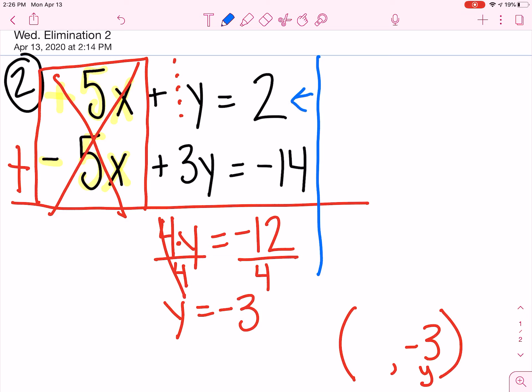I'm going to use the top one because it looks easier because it has smaller numbers, and it's all positive. So 5x, I don't know what x is, so I can't substitute anything there, plus a y, which in our case is negative 3, equals 2.